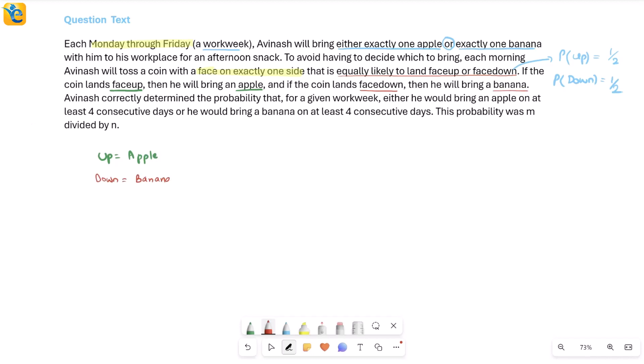Avinash correctly determined the probability that for a given work week, these five days, either he would bring an apple on at least four consecutive days or he would bring a banana on at least four consecutive days. So there is a probability we're talking about. If I express this in mathematical form, then we are talking about probability apple on at least four days or banana on at least four days.